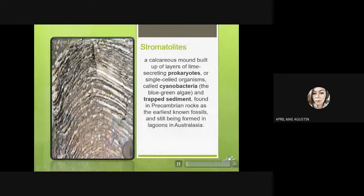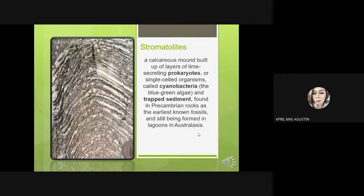Stromatolites are calcareous mounds built up of layers of lime-secreting prokaryotes, or single-celled organisms called cyanobacteria — the blue-green algae — and trapped sediments. They are found in Precambrian rocks as the earliest known fossils and are still being formed in lagoons in Australasia.